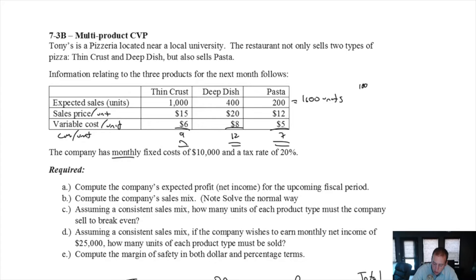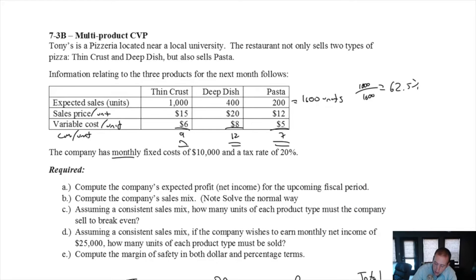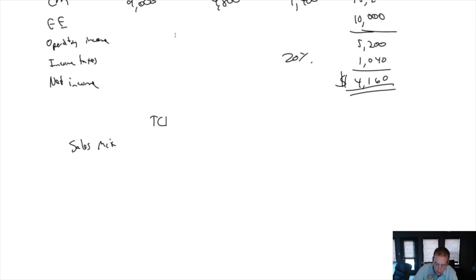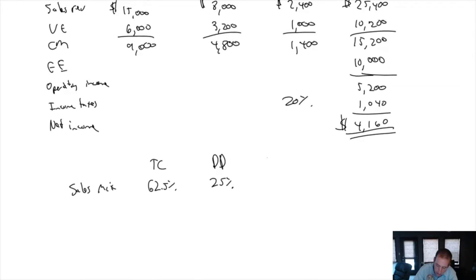1,000 out of 1,600, that's 62.5% of our sales are thin crust. 400 out of 1,600 is 25%, and that's our deep dish. Our pasta sells 200 out of 1,600, that's 12.5%. So our sales mix is thin crust 62.5%, deep dish 25%, and pasta 12.5%.